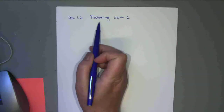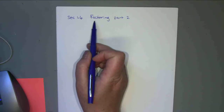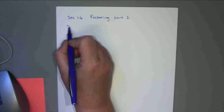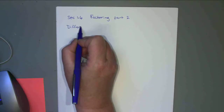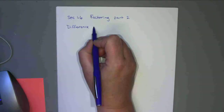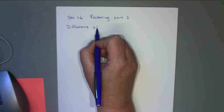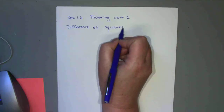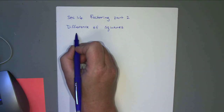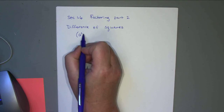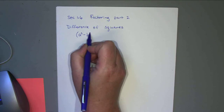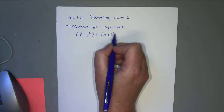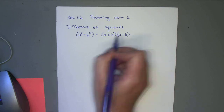We're going to finish factoring today — factoring part two. First we'll start with difference of squares. When you see something that's a difference of squares you should recognize it right away. You really need to remember this. It's a very common way to factor. I'm going to give you the general formula first and then I'll show you what this means.